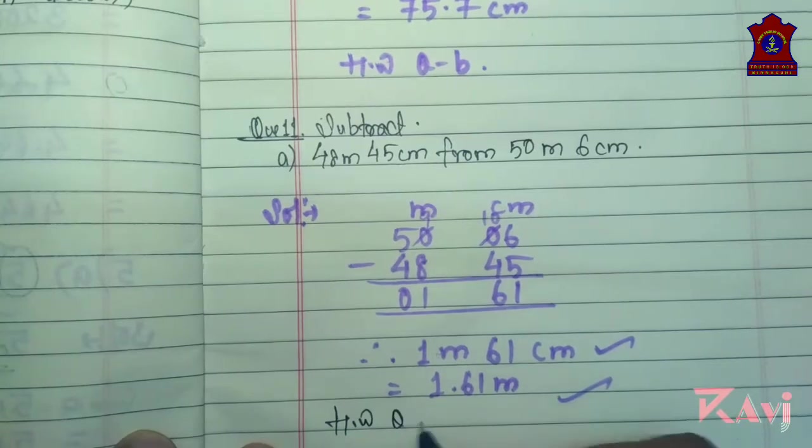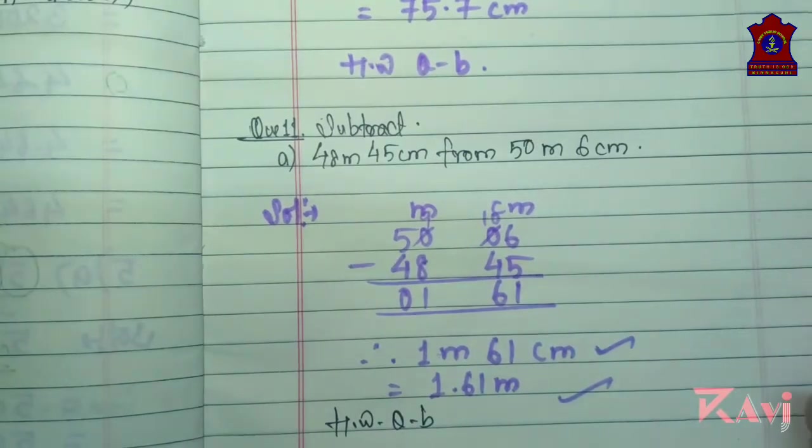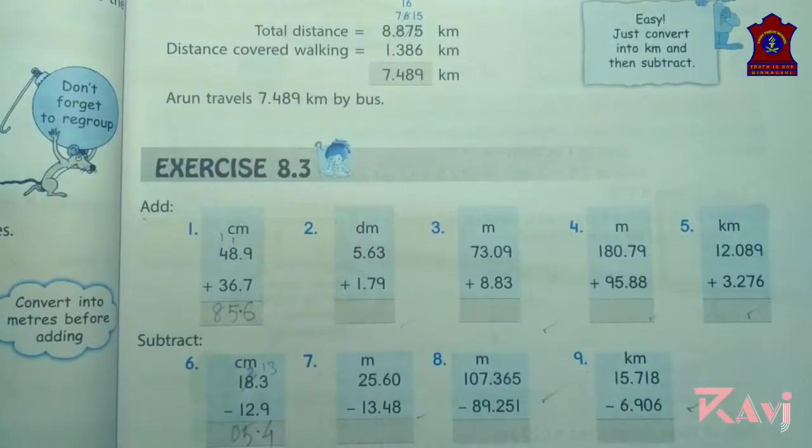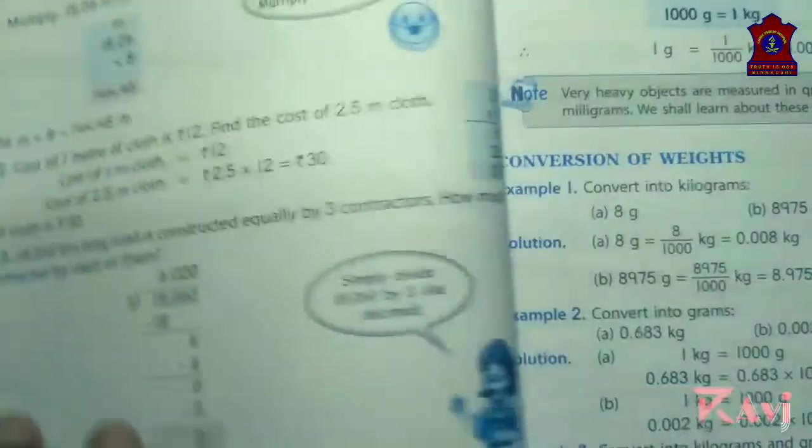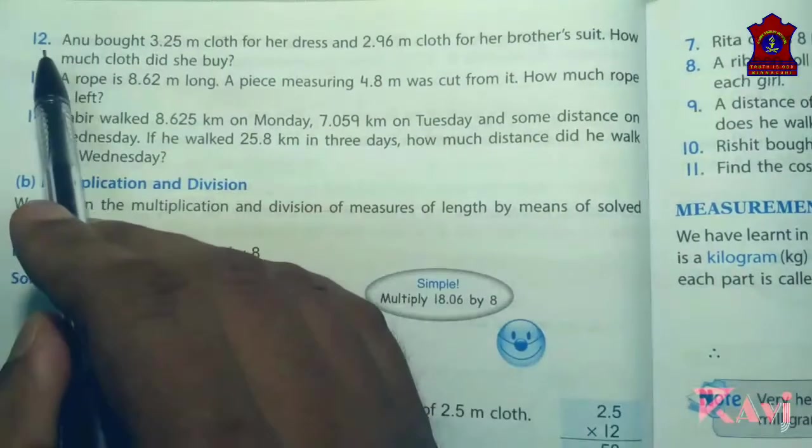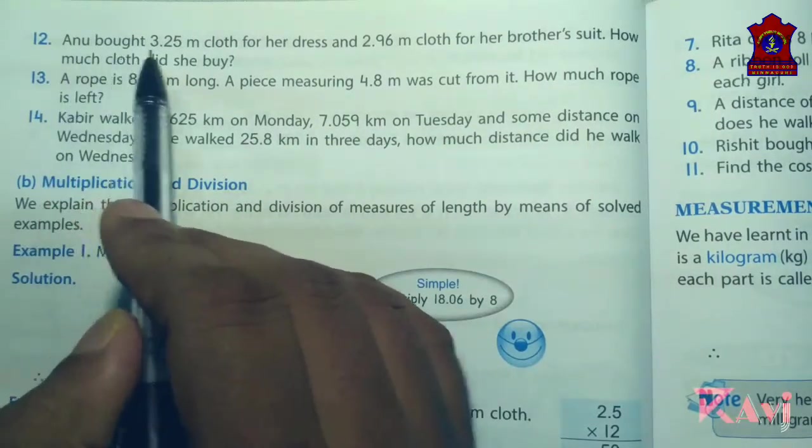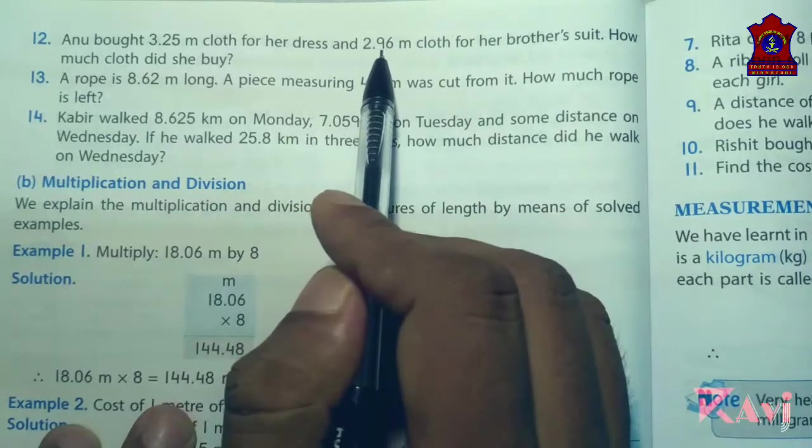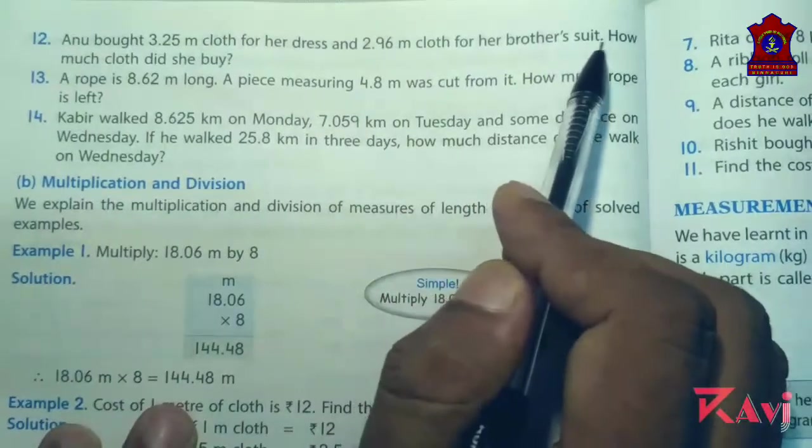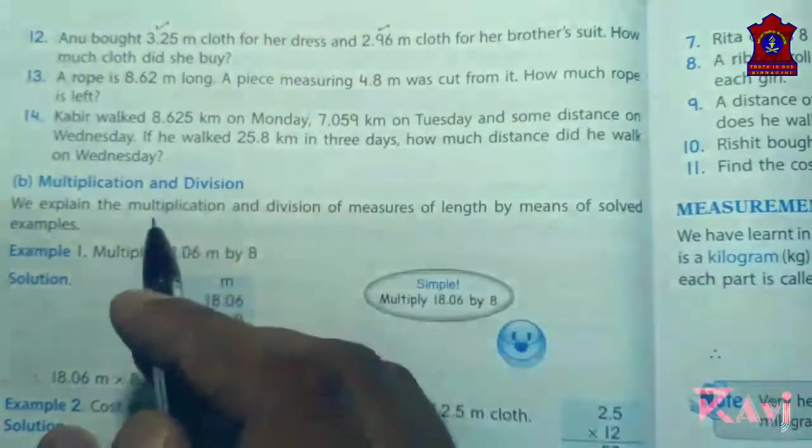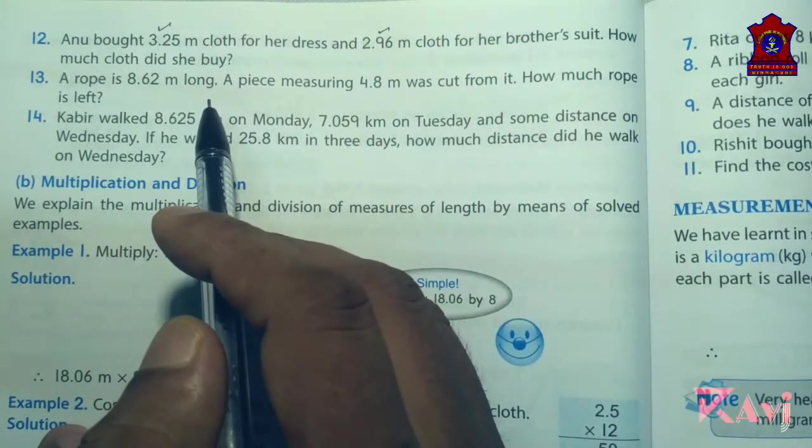Next move to question number 12. See here question number 12. Anu bought 3.25 meter cloth for her dress and 2.96 meter cloth for her brother's suit. How much cloth did she buy? What you need to do, you need to add both.